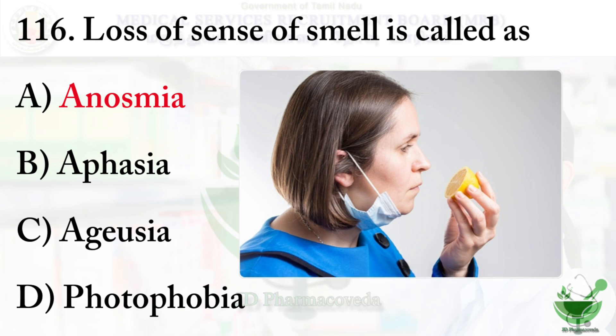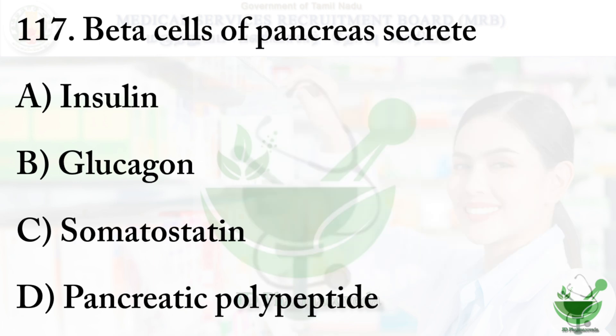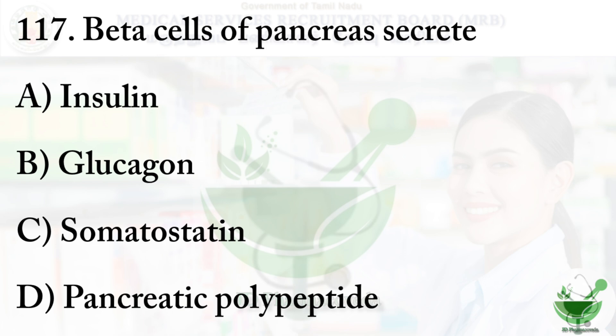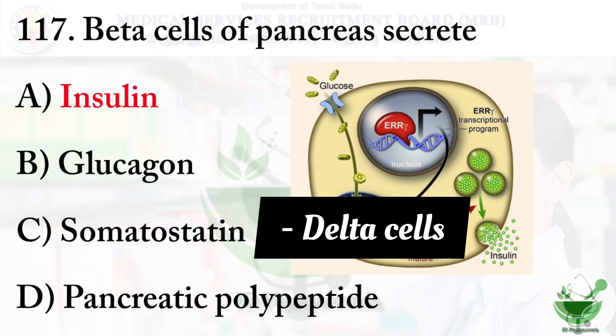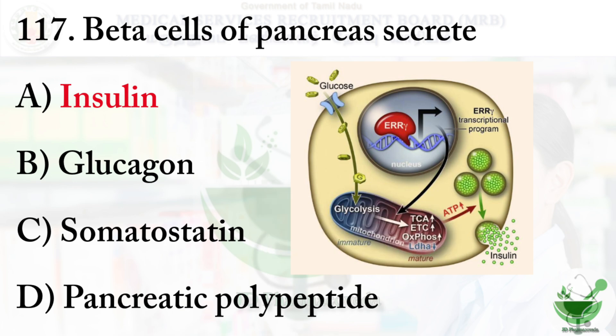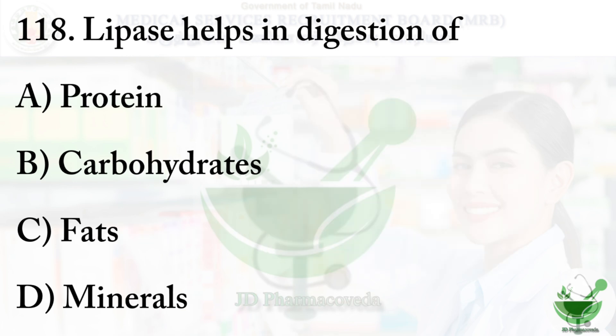Question 117: Beta cells of pancreas secrete — Option A: insulin, option B: glucagon, option C: somatostatin, option D: pancreatic polypeptide. The right option is option A, insulin. Glucagon is secreted from alpha cells, and somatostatin from delta cells.